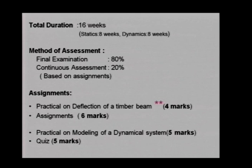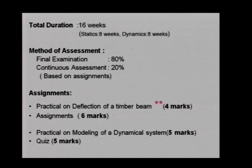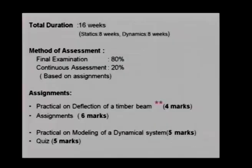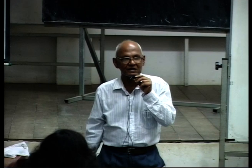Although it says 16 weeks, this semester we have only 14 weeks, because 2 weeks that should have been taught at the end of last semester were not taught. We will have maybe 6 or 7 weeks for statics and 7 weeks for dynamics. The final examination will get you 80 percent, and 20 percent will come from continuous assessment. Out of those 20 marks, 10 marks will be given by civil engineering — one will be a practical on the deflection of a timber beam, and the other will be an assignment given in class.